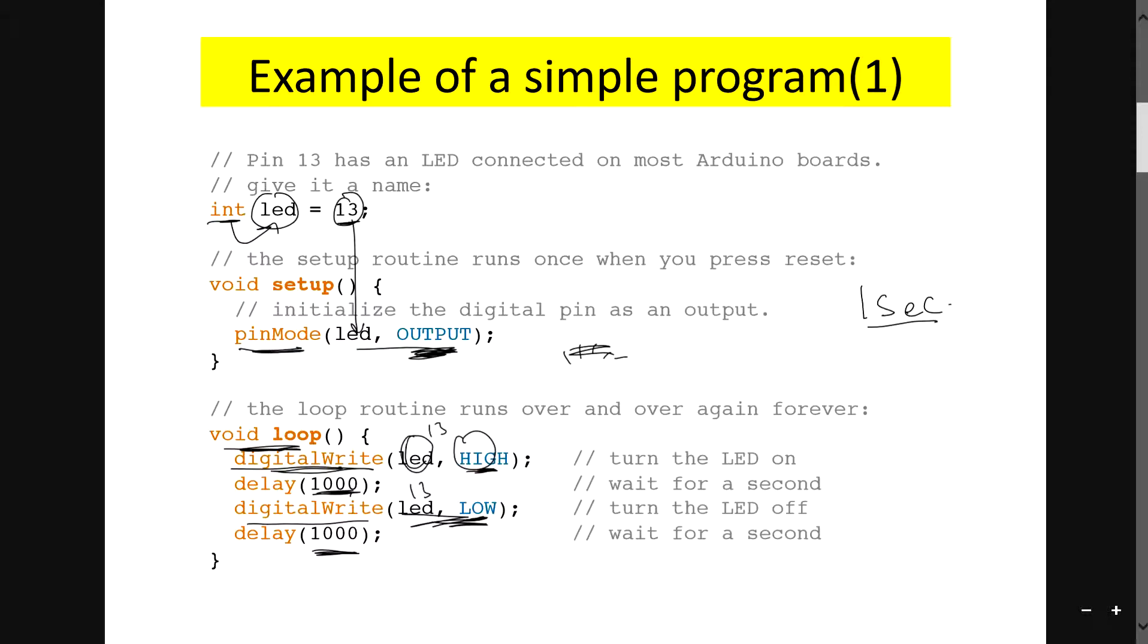So when it loops, you on for 1 second high, and then you off for 1 second low. And then you on for 1 second high, and then you go along with the loop. So you on and off, on and off, on and off.